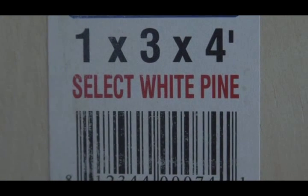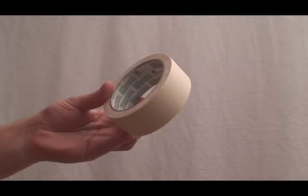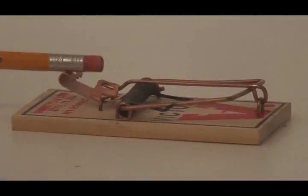You'll need a half inch by three inch strip of wood about four feet long and a half inch square dowel about the same length. You'll also need some cardboard, tape, scissors, glue, and a mouse trap.